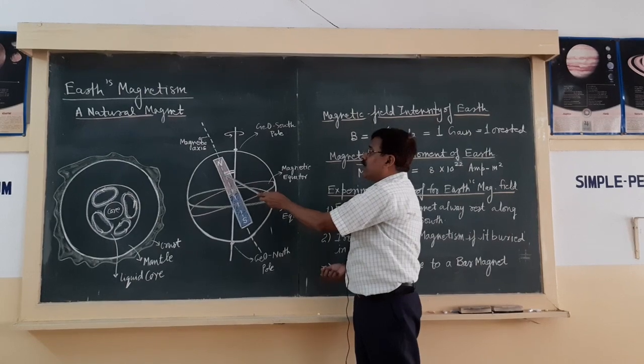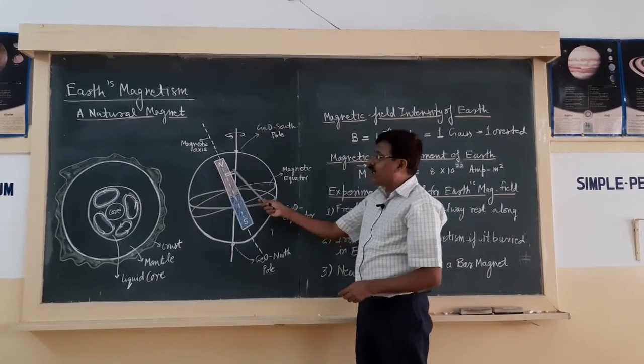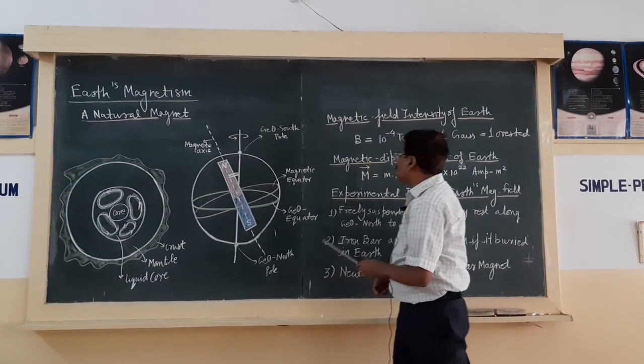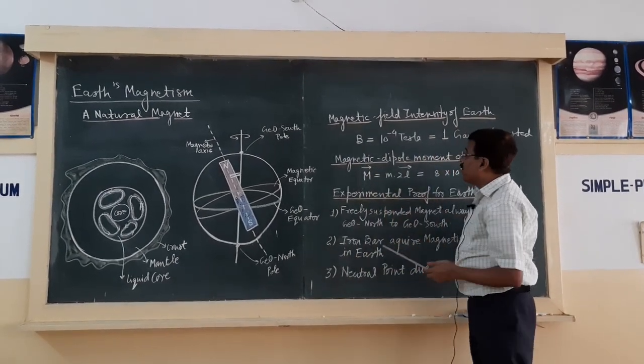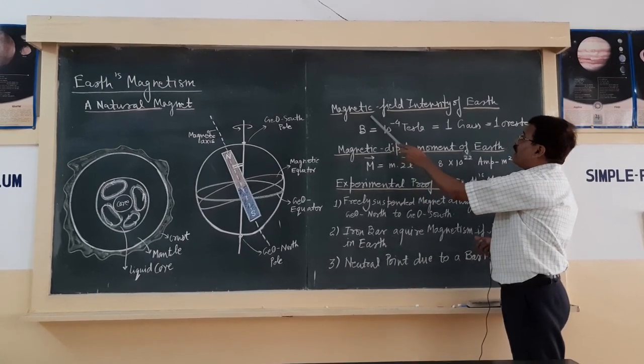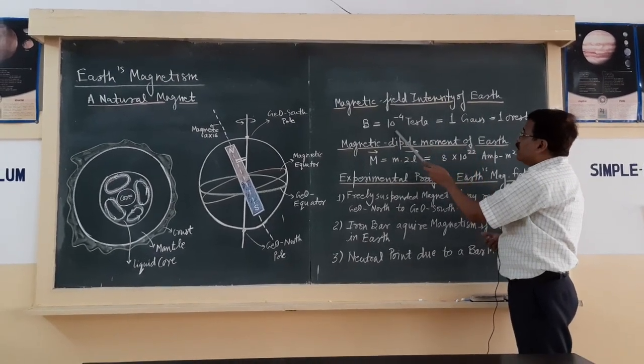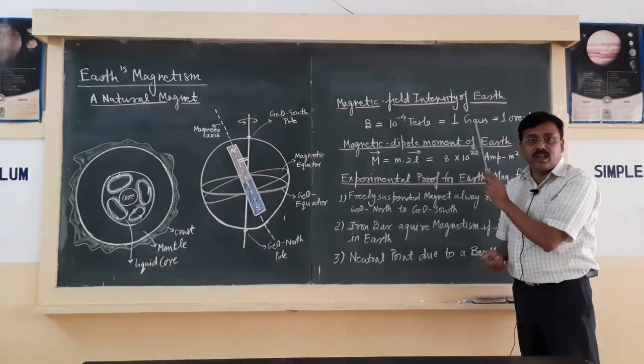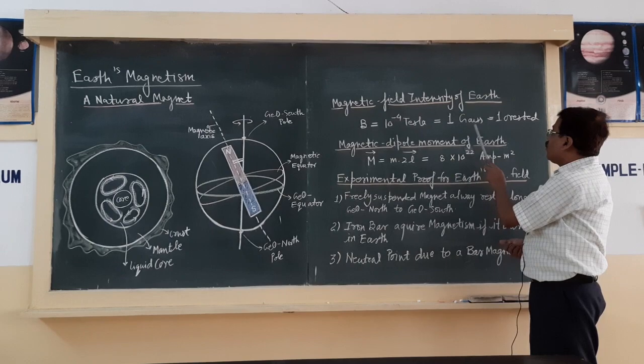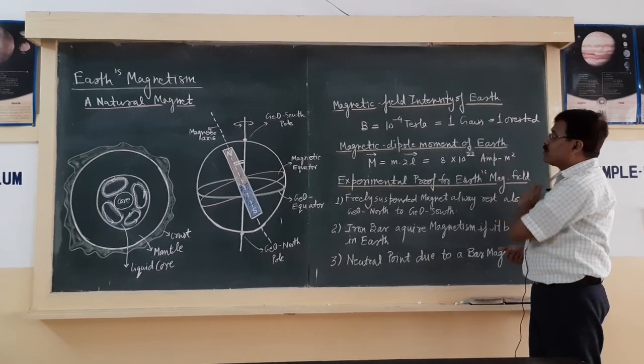Number two: what are the numerical values of the earth magnetic field? The numerical value of the earth magnetic field intensity is 10 to the power minus 4 tesla, or one gauss, and one gauss is also termed as one oersted on our earth's surface.